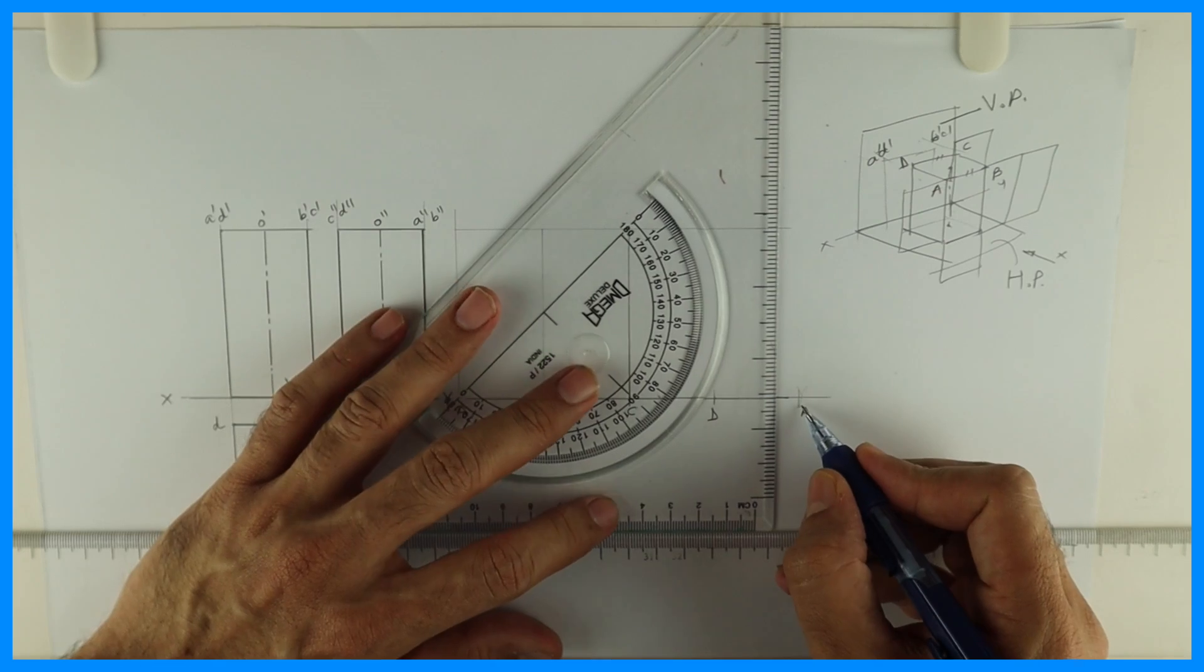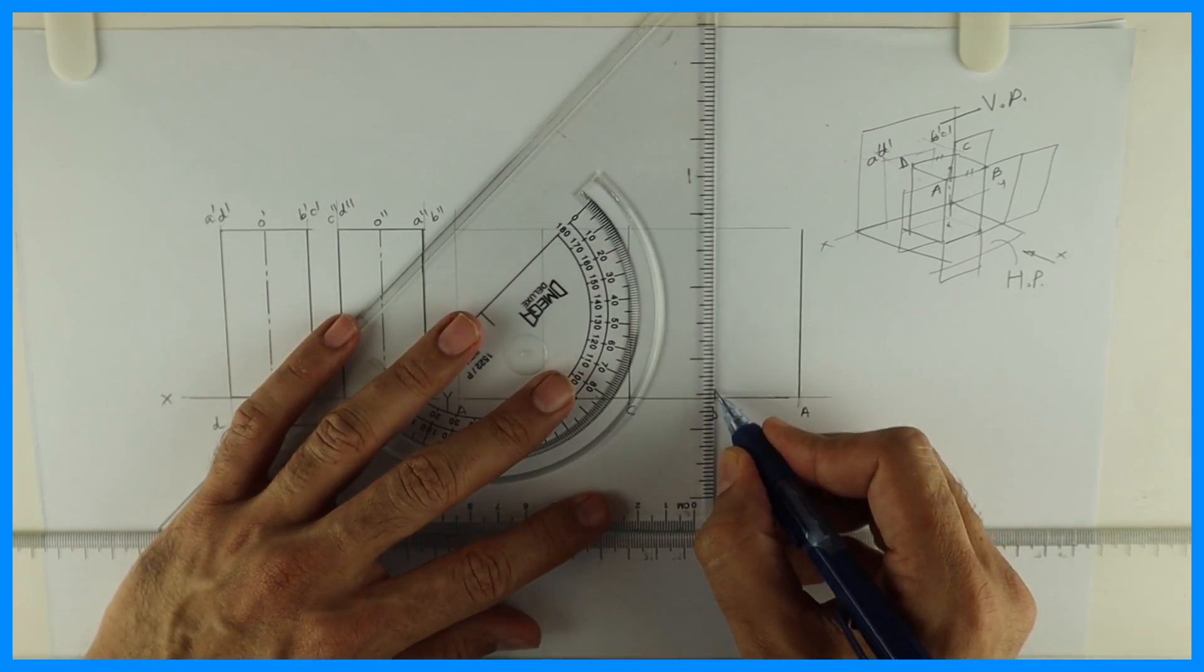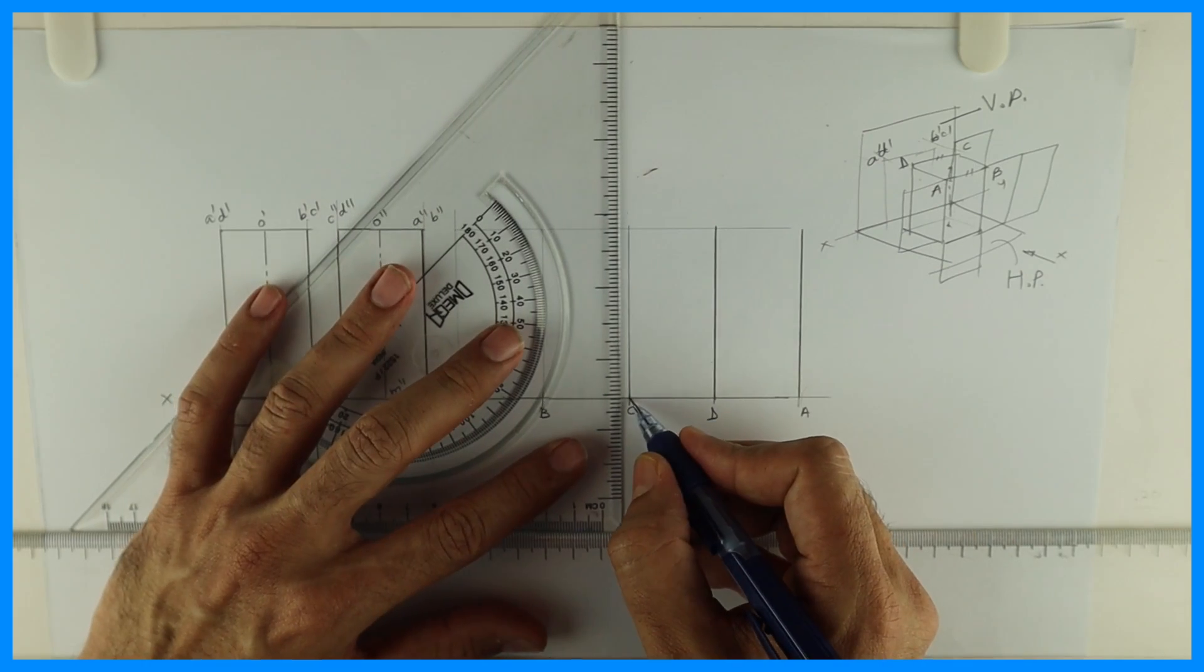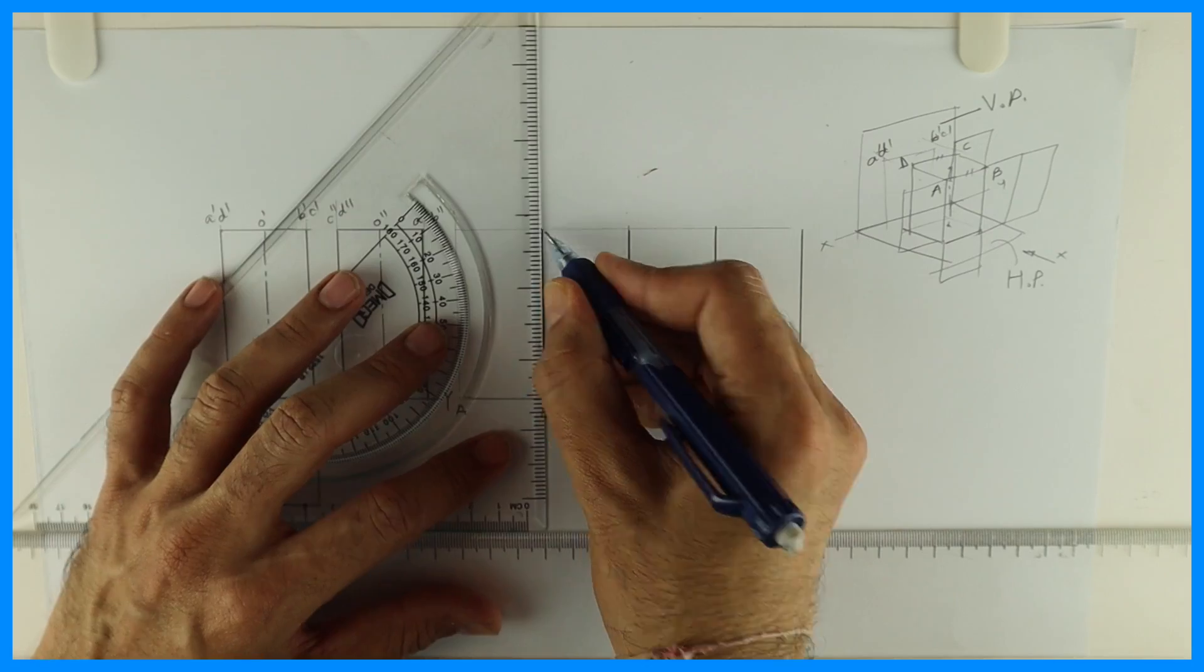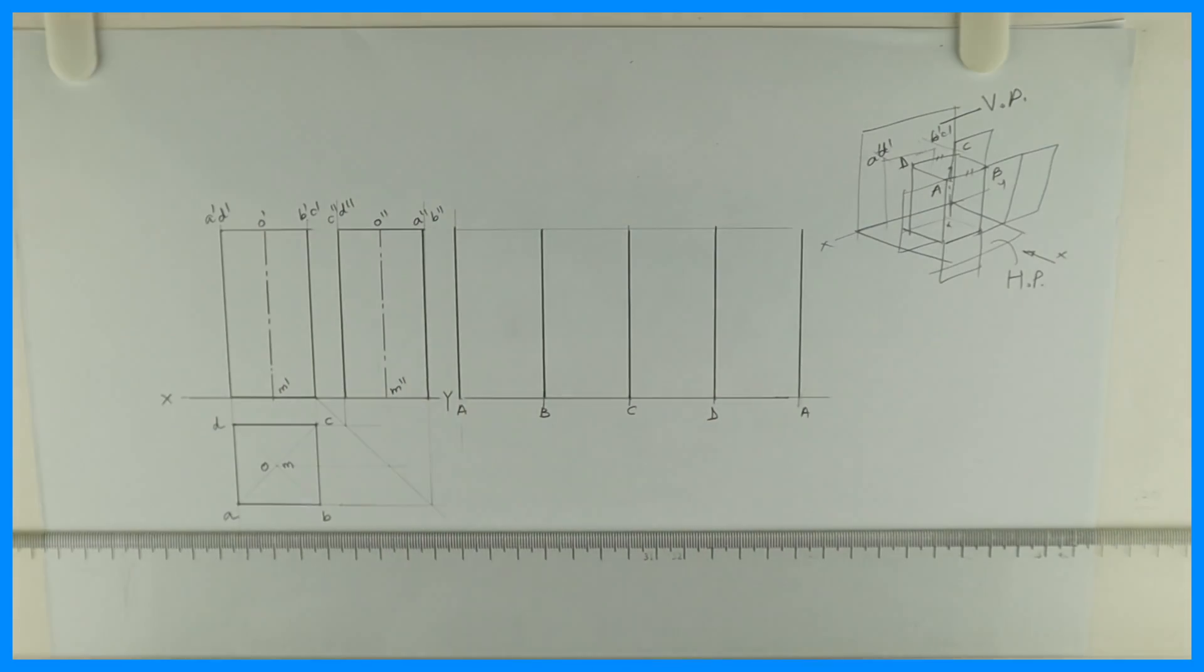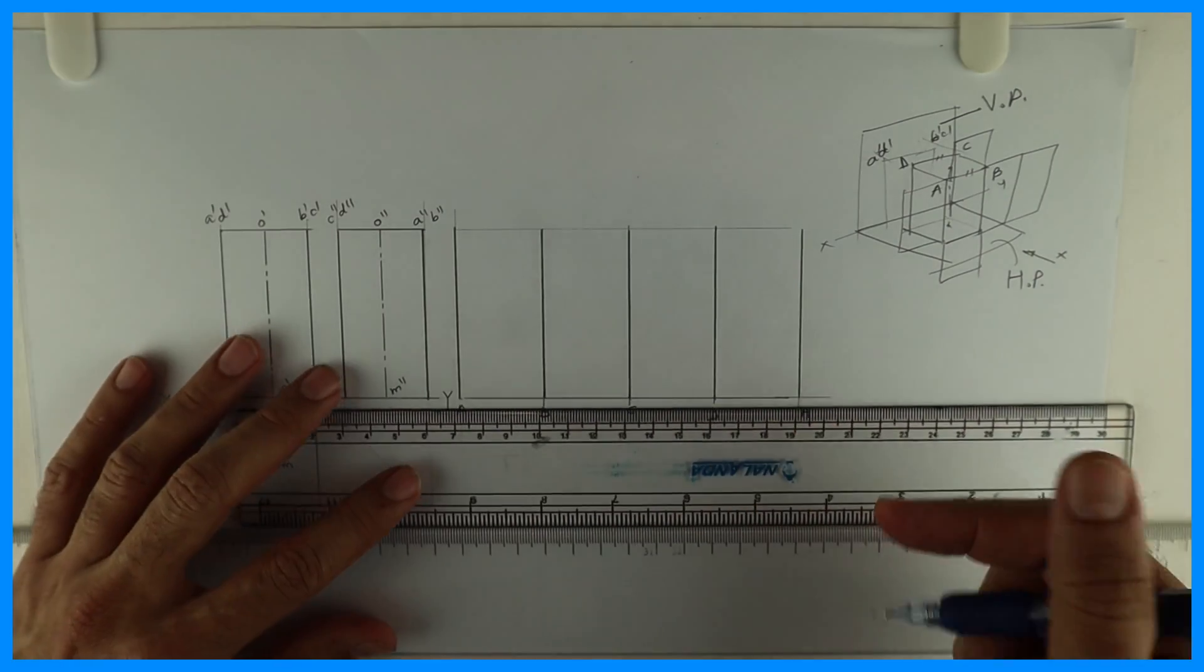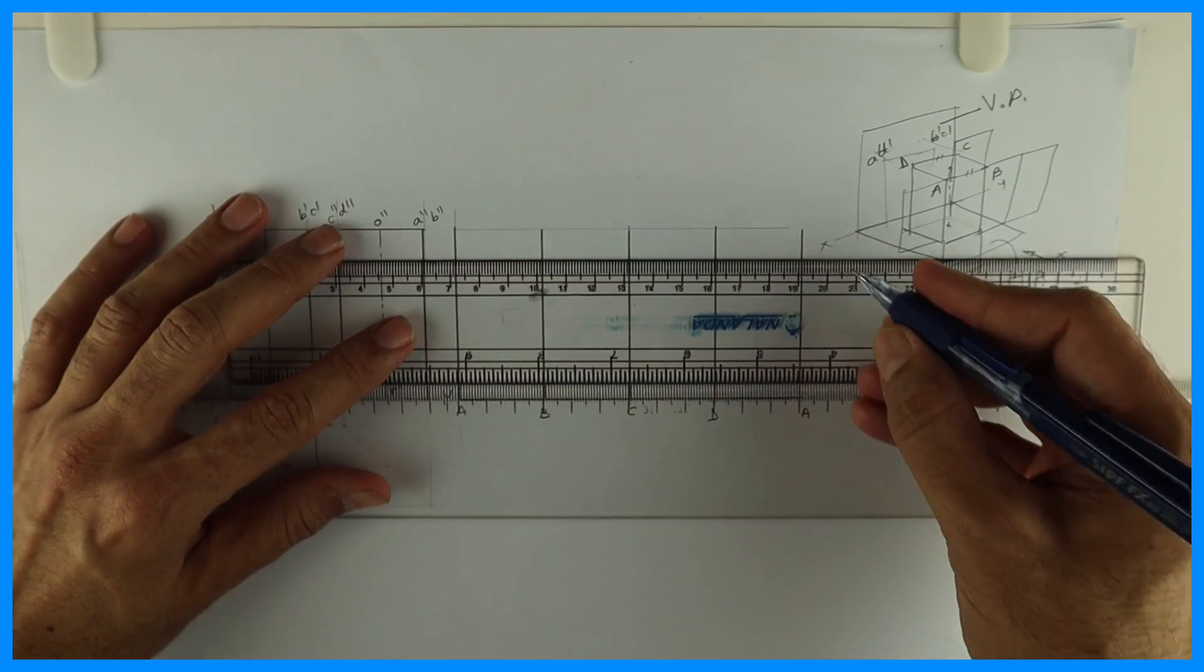Then you join all these lines straight up. Height would be 60. So what you will get right now is called lateral surface development. In ICSC and all everywhere, they will ask you lateral surface development. We will do total surface development only for the model making.